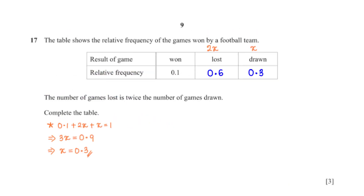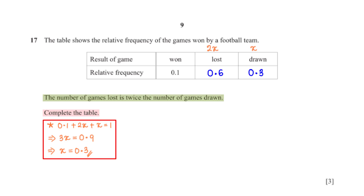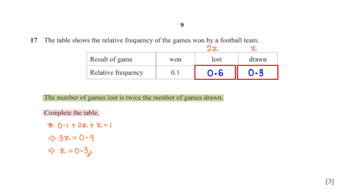The table shows the relative frequency of the games won by a football team. The number of games lost is twice the number of games drawn. Complete the table. If we represent the relative frequency for the number of games drawn with x, then the relative frequency for the number of games lost would be 2x. The sum of all the relative frequencies should equal 1, so we have 0.1 plus 2x plus x equals 1. When we group like terms and divide through by 3, we get x equals 0.3. So the relative frequency for games drawn is 0.3 and for games lost is 2 times 0.3, which is 0.6.